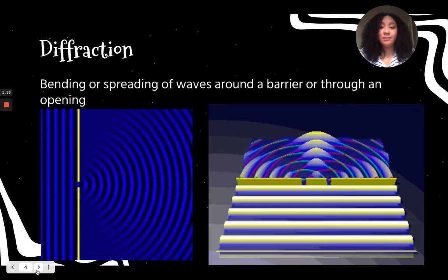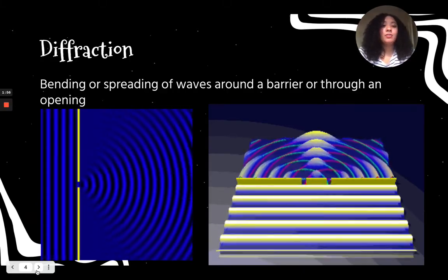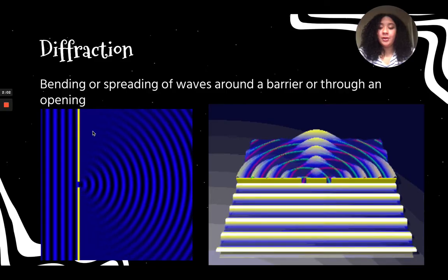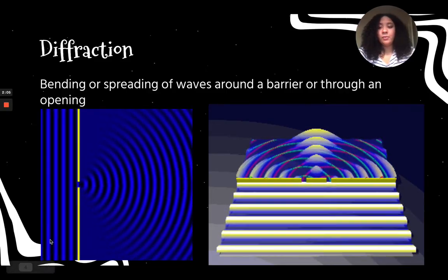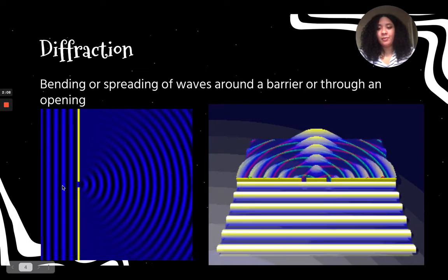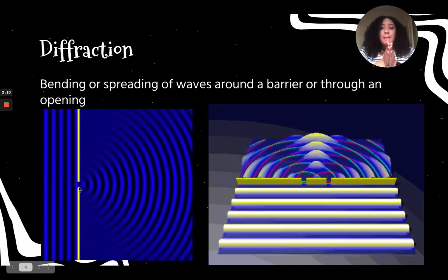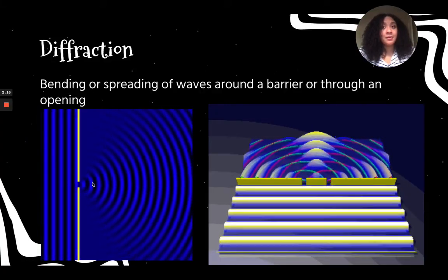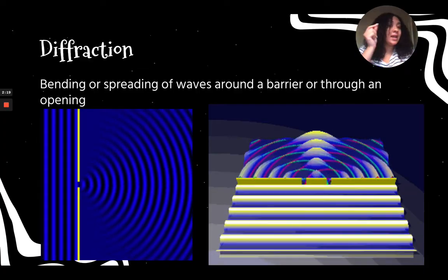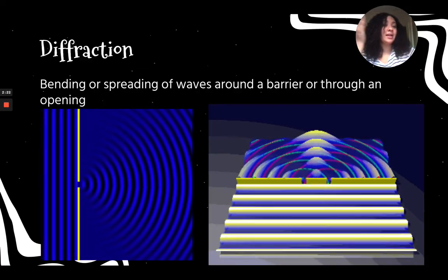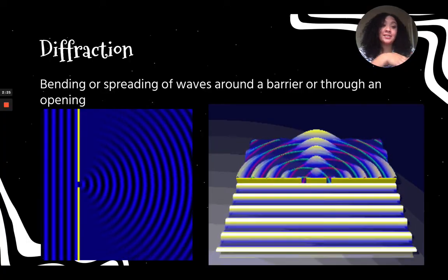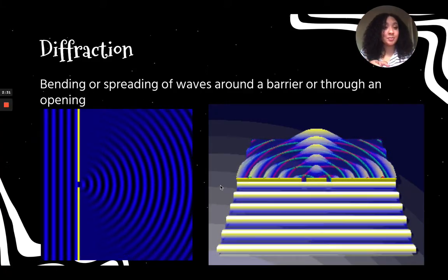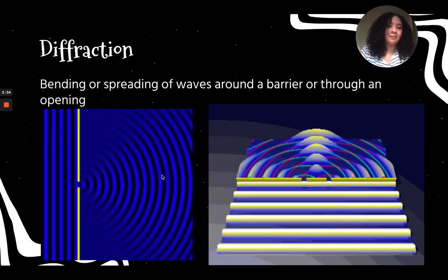Then there's diffraction. That's the bending or spreading of waves around a barrier or through an opening. These pictures are showing through an opening. The waves are straight, and then once it hits that opening, it kind of bends and spreads out. You could also see this if you have a crack in your door and the lights on. Maybe in your living room, and it's dark in your room, and you're trying to sleep, but there's a little crack, and then the light kind of shines through. There might be light and dark spaces, or just a spreading of that light wave.